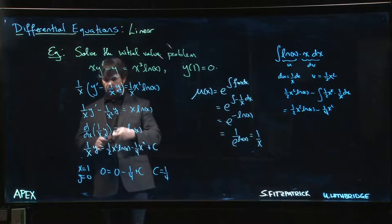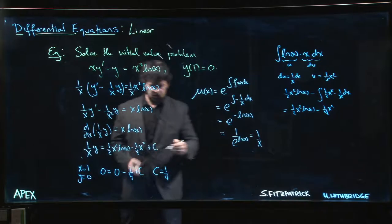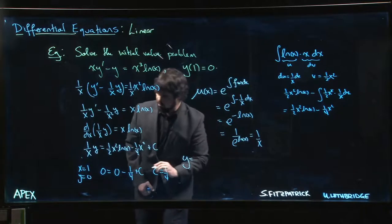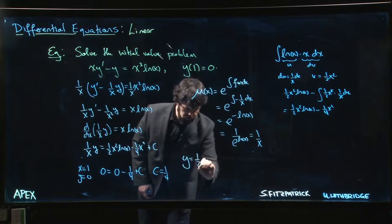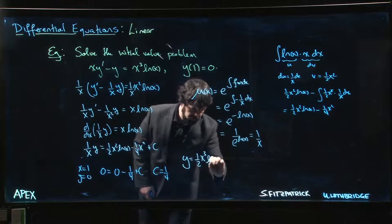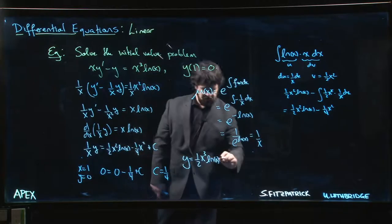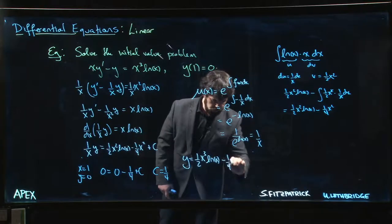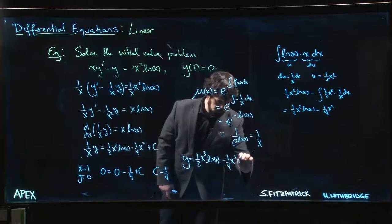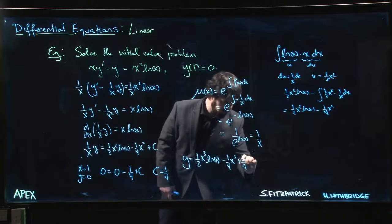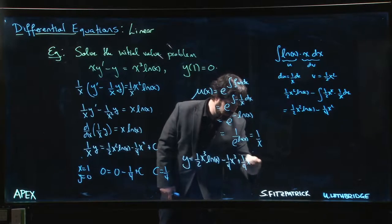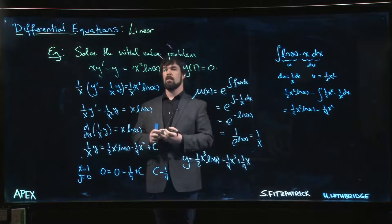To solve for y, we multiply both sides by x. So y = (1/2)x³ log x - (1/4)x³ + 1/4. There's my C times x. And we're done.